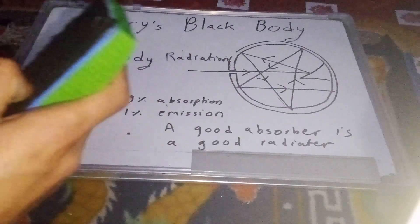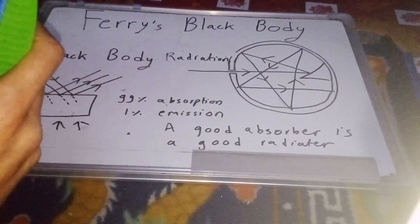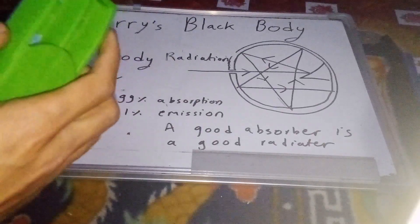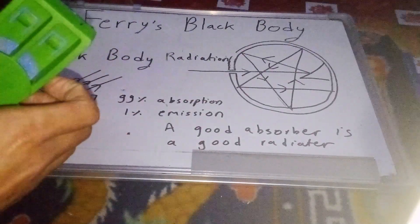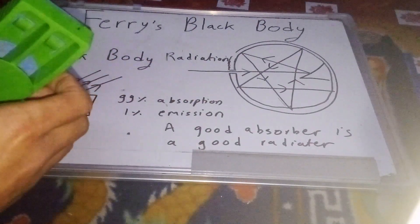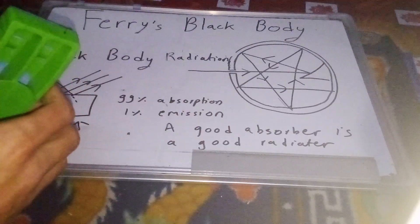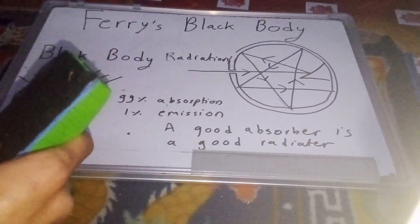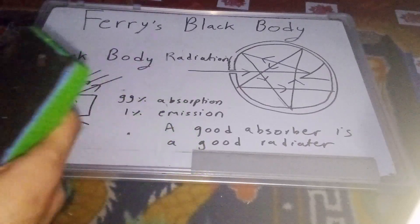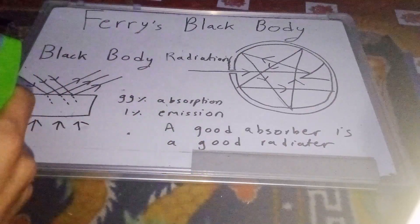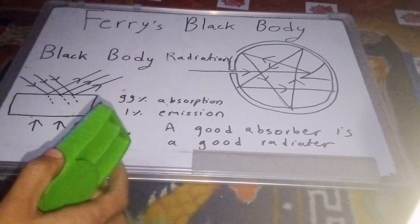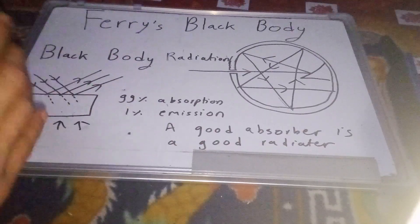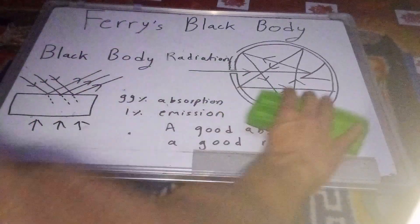If you don't absorb heat, then you will emit heat. You will emit heat in the mid or winter season. This is a daily life example and an application for the black body.